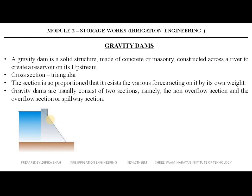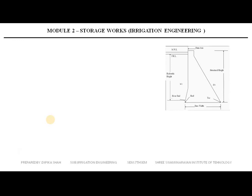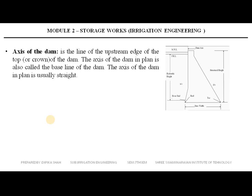The cross section is so proportioned that it resists various forces acting on it by its weight. When suitable foundation conditions are available, such a dam can be constructed up to great heights. The highest gravity dam in the world is the Grand Dixence dam in Switzerland, with a height of 285 meters. The second highest gravity dam is the Bhakra dam in India, with a height of 226 meters. The ratio of base width to the height of most gravity dams is less than 1. The upstream face is vertical or slightly inclined, and the slope of the downstream face varies between 0.7H:1V to 0.8H:1V.